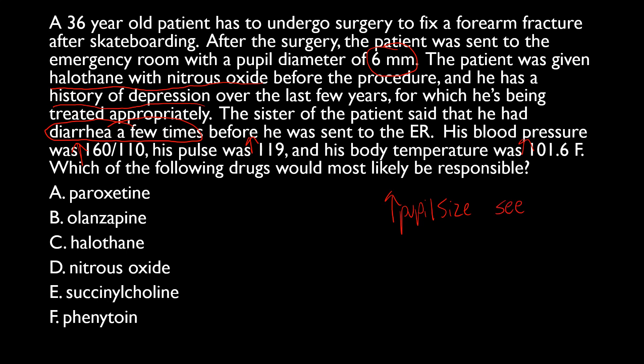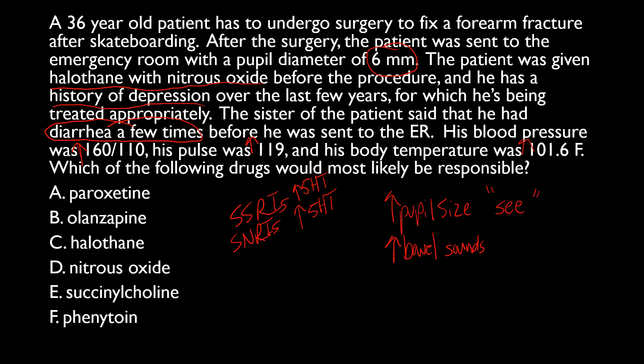The increased pupil size points toward serotonin syndrome — recall the 'S for see' mnemonic. The diarrhea indicates increased bowel sounds, also consistent with serotonin syndrome. Combined with the history of depression treated with antidepressants — most likely an SSRI or SNRI — both of which increase 5-HT, the picture is clear: excess serotonin causing increased pupil size and increased bowel sounds equals serotonin syndrome.